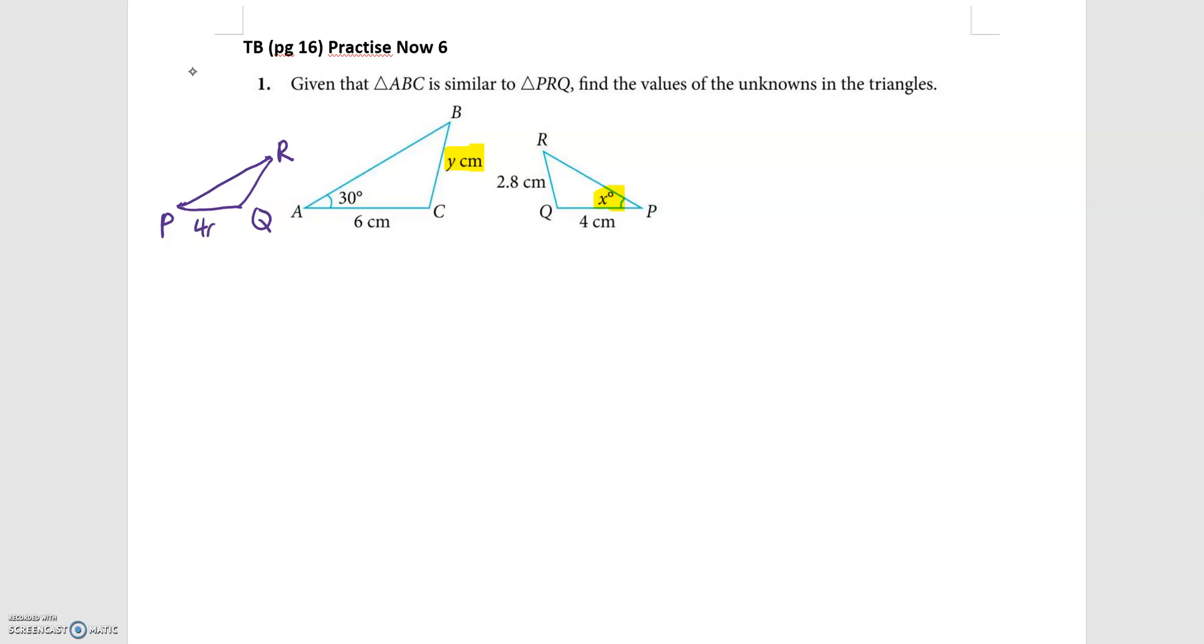I know that PQ is 4 cm, QR is 2.8 cm, and the angle that they are looking for, x, is actually here. So this will help me do a direct comparison for the angles. To find the unknown value of x, x is actually angle RPQ which is the same as angle BAC which is 30. So the value of x is actually 30.